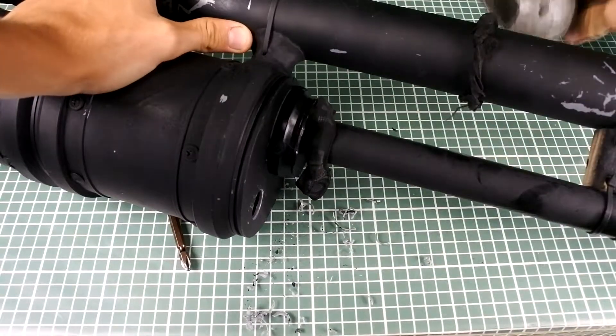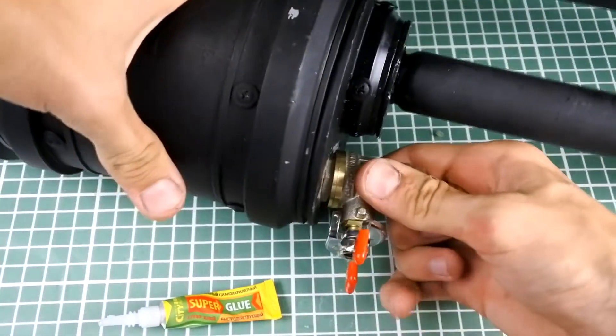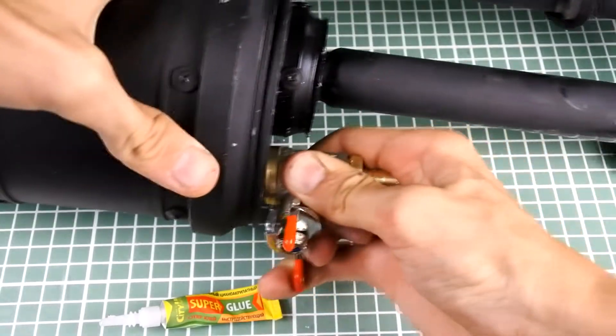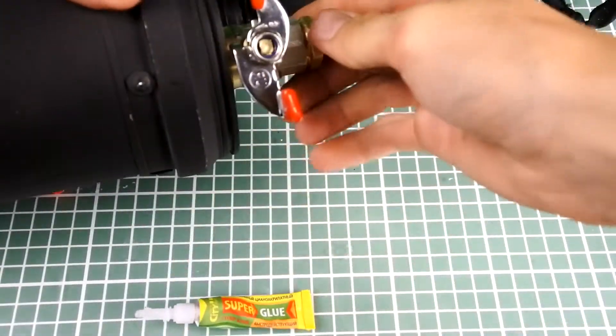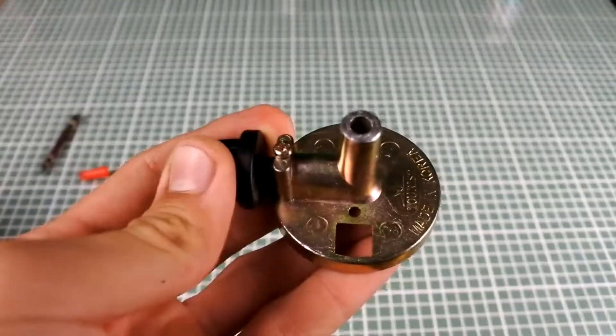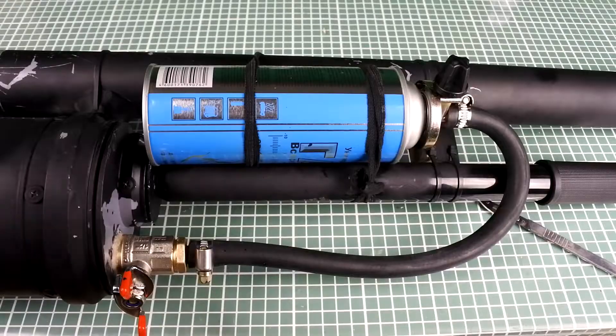It will be difficult for me to explain how it works, but I will try. So for this mechanism we need water tap, hose and tap for gas. And we need to connect it like on the video.